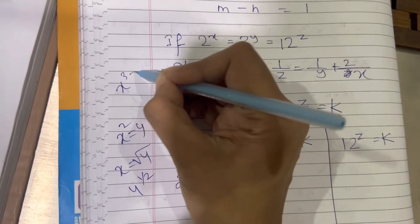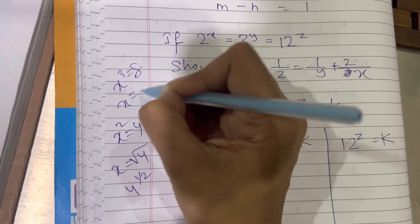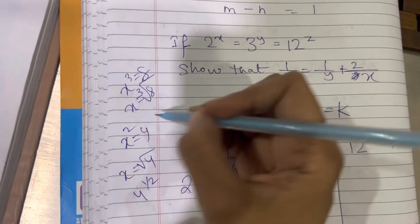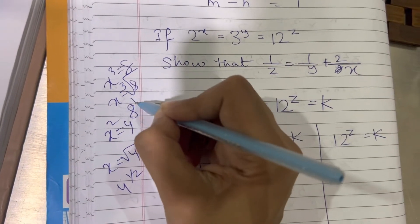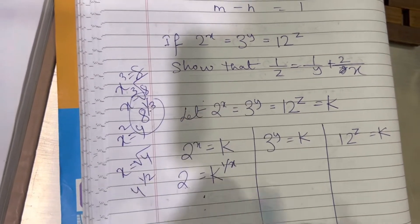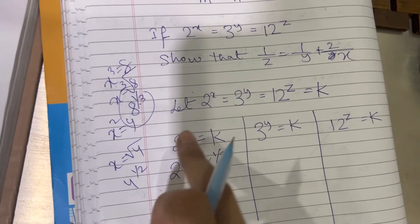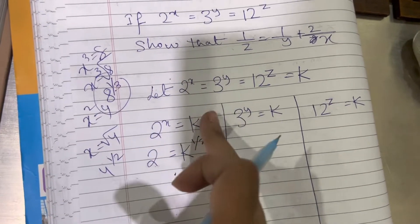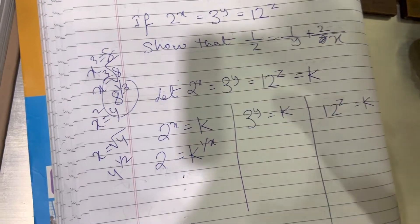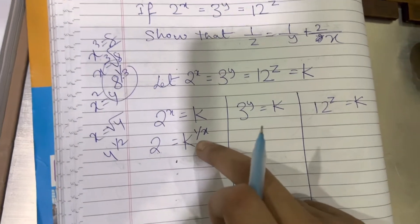Suppose I say x cube is equal to 8. We say therefore x will be equal to cube root. What is cube root? Cube root is nothing but to the power 1 third. So when the power is shifted to the other hand side of the equation, we write its reciprocal.